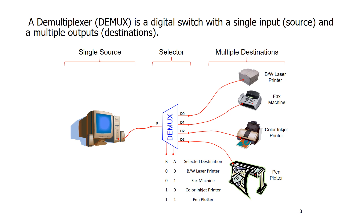A demultiplexer, or demux as it's sometimes abbreviated, is the opposite of a multiplexer as you might have expected. I have one input — this very old-looking computer right here — my single input, and I have several output choices. Perhaps I have a document that I want to print, and I can select which of these outputs I want to send my document to: it might be my laser printer, my fax machine, my inkjet, or a pen plotter. So a demultiplexer is the opposite of a multiplexer — one input and multiple outputs.